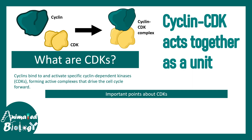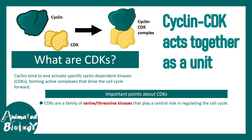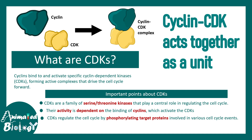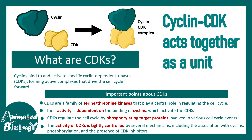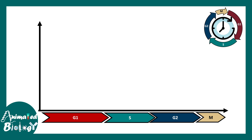There are important functions regulated by CDKs. At a structural level they are serine-threonine kinases, so they phosphorylate serine or threonine residues in target proteins. Their activity is dependent on binding to cyclins — without cyclin they are nothing. CDKs regulate cell cycle progression by phosphorylating several target proteins, and ultimately the activity of the cyclin-CDK complex is tightly regulated by several kinases and phosphatases.